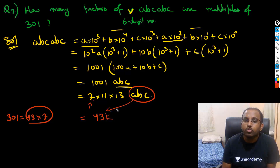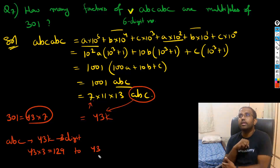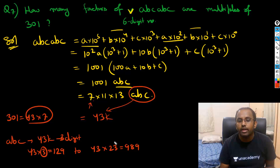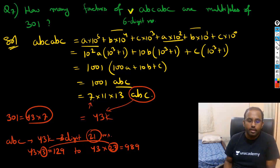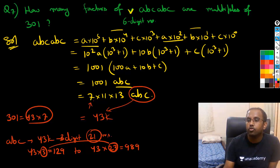So abc must be a three-digit multiple of 43. The smallest is 43 × 3 = 129, and the largest is 43 × 23 = 989. That's from multiplier 3 to multiplier 23, giving us 21 values.